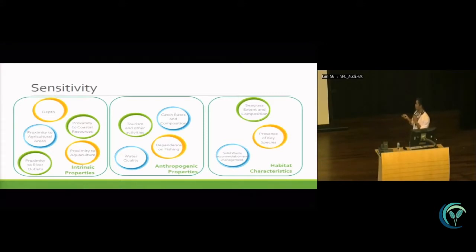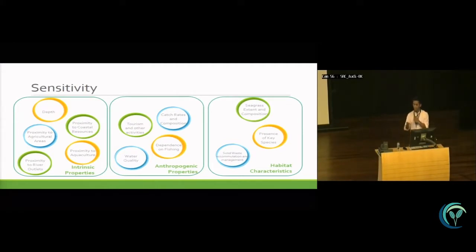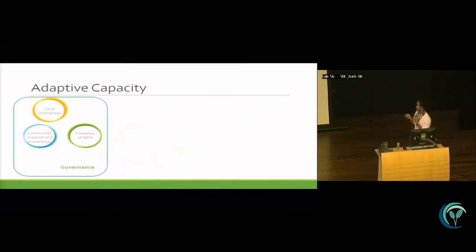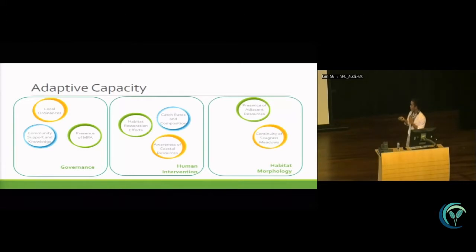For habitat characteristics, we assessed seagrass extent and composition, presence of fish species, and solid waste accumulation management. For this part, we conducted focus group discussions, visiting different villages and using prepared questionnaires. We assigned scores for each answer and consolidated them to determine the final sensitivity scores. For adaptive capacity, there are three components including governance, with scores also determined from the focus group discussions.